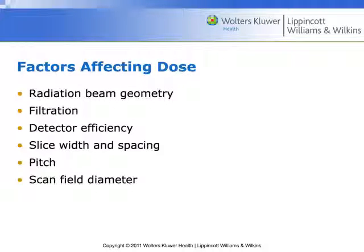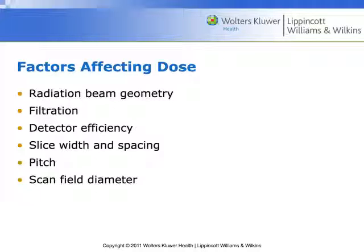Here are the factors that affect patient dose — some we have control over, some are determined by the protocol. Radiation beam geometry: specifically whether the rotation arc of the CT scan is 180 degrees, 360 degrees, or if there's an over-scan like with a fourth-generation scanner at 400 degrees — that additional arc causes additional dose. Filtration: CT uses a great deal of filtration, so the beam is significantly harder than conventional radiography, which does affect dose — and that's a good thing.